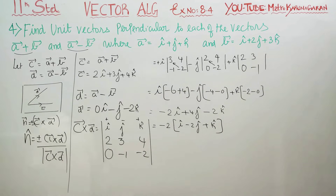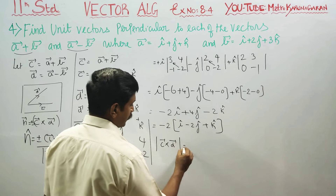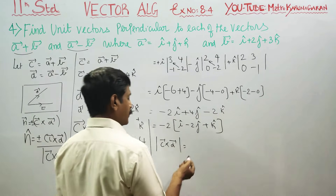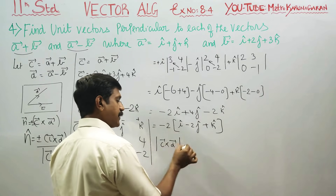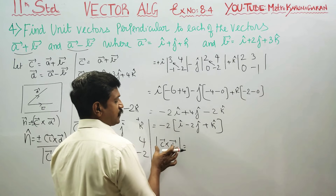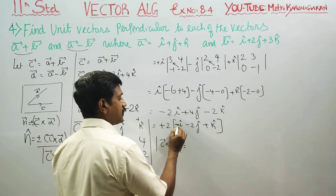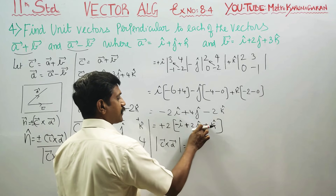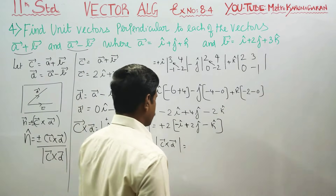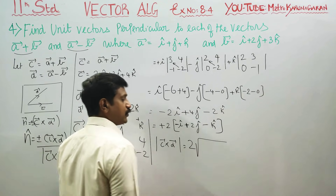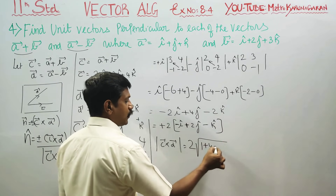Now we find the magnitude of c cross d. Using the formula square root of x squared plus y squared plus z squared, with components 1, 2, 1 after factoring: 1 squared is 1, 2 squared is 4, 1 squared is 1, giving root 6. With the factor of 2 outside, the magnitude of c cross d is 2 root 6.